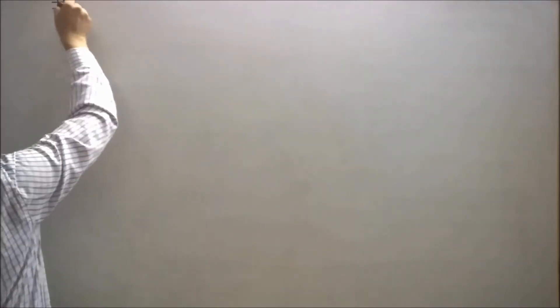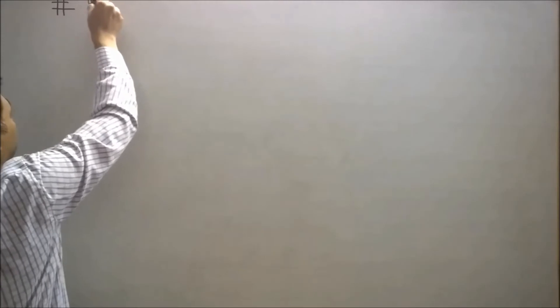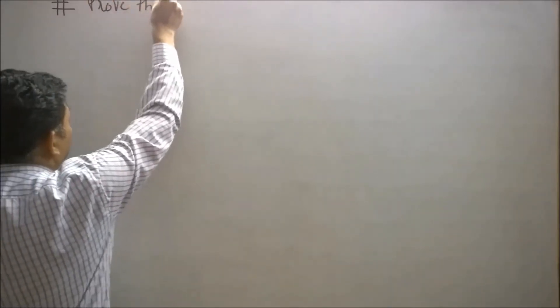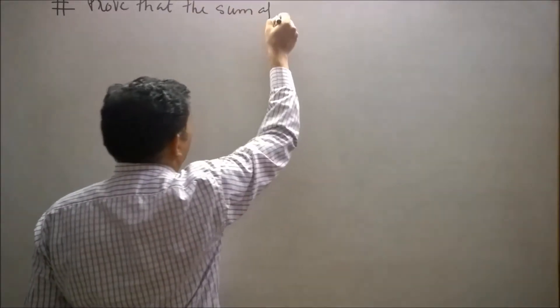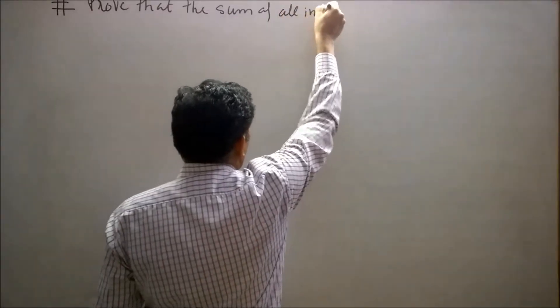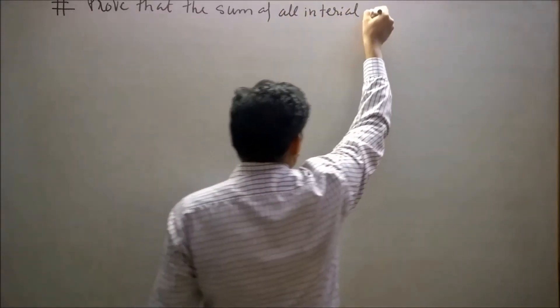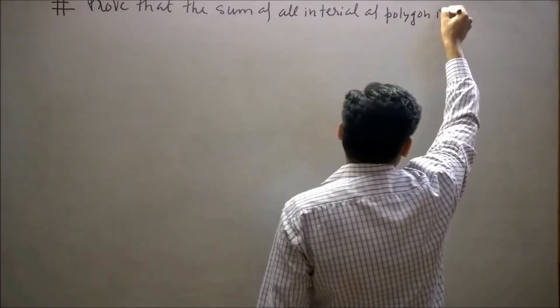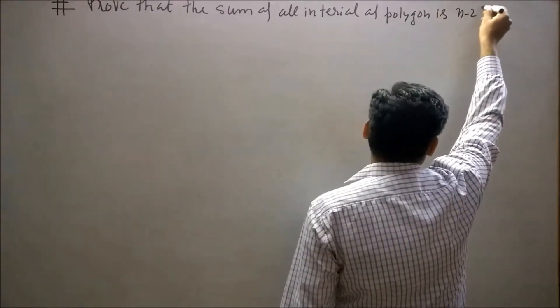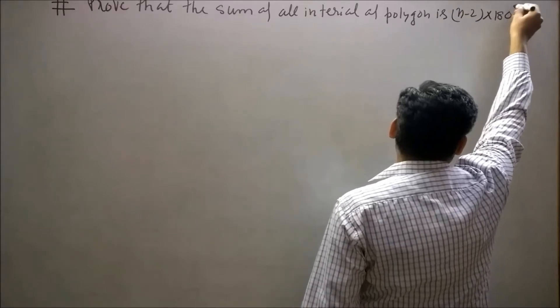In today's lecture, I am going to prove that the sum of interior angles of any polygon is (n-2) × 180 degrees.